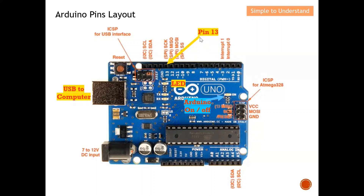Earlier I mentioned pin 13 — you can count from pin 0 all the way to pin 13 here. Pin 13 is connected to the LED on the Arduino board, which means if pin 13 is high the LED will light up, and if pin 13 is low the LED will not light up. So let's quickly switch to how we can actually install the Arduino software.